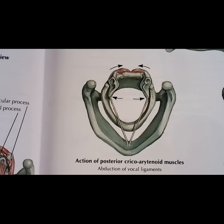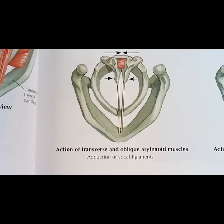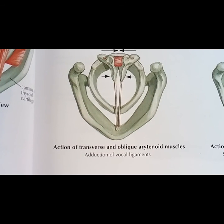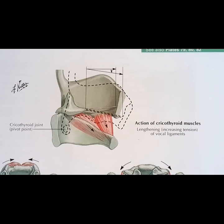This is a diagram showing the action of posterior cricoarytenoids — they cause abduction of vocal ligaments. In this diagram we can see the action of lateral cricoarytenoid muscles — they cause adduction of vocal ligaments. This diagram shows the action of transverse and oblique arytenoids, which cause adduction of vocal ligaments. This diagram shows the action of vocalis and external part of thyroarytenoid muscles — they cause relaxation or shortening of vocal ligaments. And this diagram shows the action of cricothyroid muscles — they cause lengthening or increase in tension of the vocal ligaments. The cricothyroid joint acts as a pivoting point.